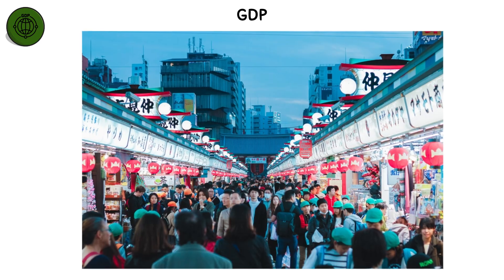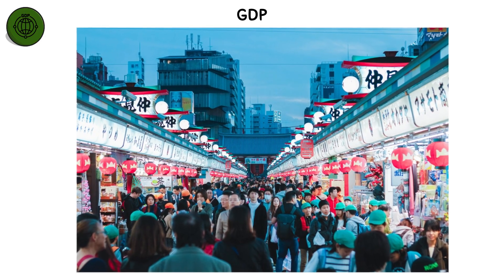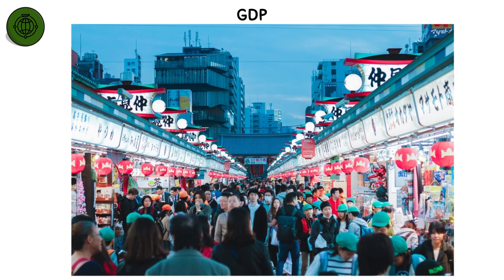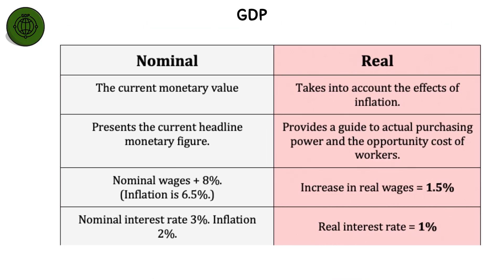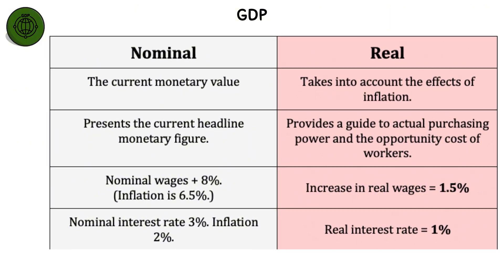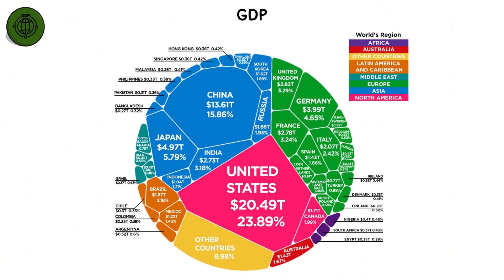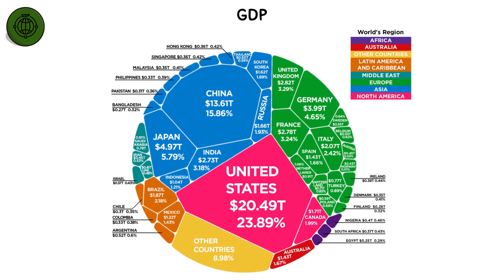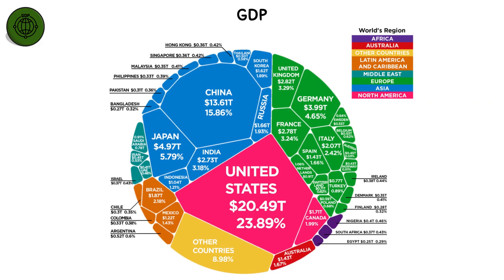When GDP grows, it signals expansion, higher employment, and increased prosperity. When it shrinks, it often indicates recession. GDP can be measured in nominal terms at current prices, or in real terms adjusted for inflation. Although widely used, GDP has limits — it doesn't capture inequality, environmental damage, or unpaid labor, making it an incomplete measure of true well-being.